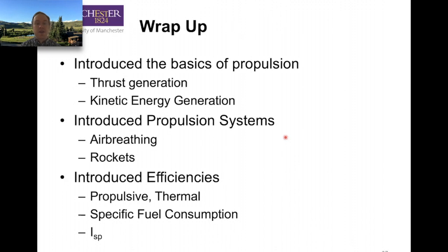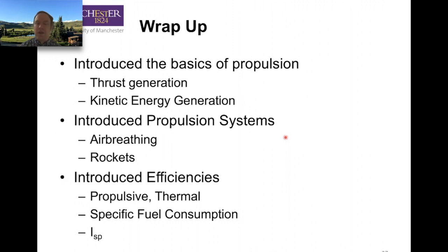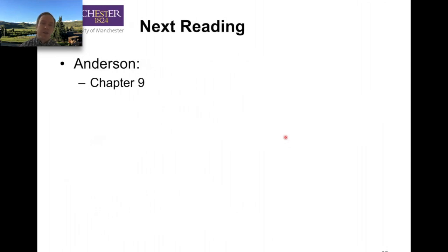As a wrap-up, over the last four videos we've introduced the basics of propulsion — how we generate thrust via delta in kinetic energy, different types of propulsion systems (air-breathing, piston props, jets, rockets both chemical and electrical), efficiencies (propulsive, thermal, and propeller), specific fuel consumption, and its inverse, specific impulse. This links back to our last topic in spaceflight, as well as flight mechanics and aircraft performance in the future. For further reading, see Anderson chapter 9. Next week, we'll talk about artifacts of import. Thank you very much, and stay tuned.